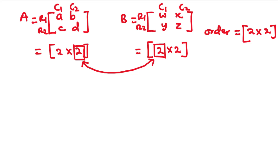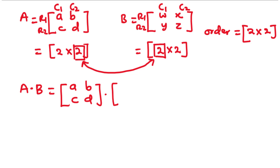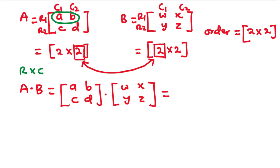Now let's try to multiply the two matrices, that is matrices A and B. We have matrix A as A, B, C, D and matrix B as W, X, Y, Z. In multiplying matrices, we always multiply the row by the column. We are going to multiply the first row of matrix A by the first column of matrix B and the second column of matrix B, and that completes the first row of the resultant matrix.